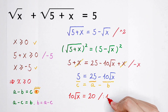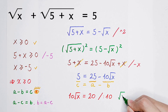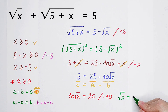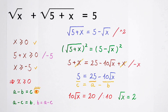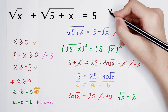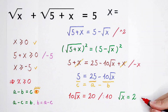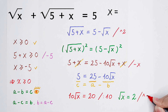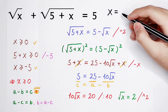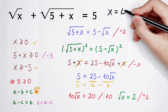We divide both sides by 10 and get square root of x equals 20 divided by 10, which is 2. So square root of x equals 2. Finally, squaring both sides gives x equals 2 squared, which is 4.